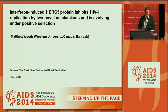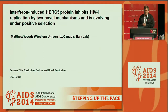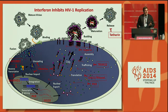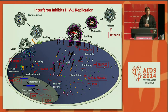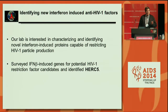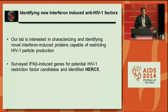HERC5 restricts two stages of the HIV type 1 life cycle, and it is a protein undergoing positive selection. When your body is infected with a virus, your cells detect the presence of a virus and produce interferon, which causes up-regulation of interferon-induced proteins. Some of these have been shown to be antiviral, restricting various stages of the HIV type 1 life cycle. Our lab is interested in characterizing the anti-HIV effect of interferon and identifying novel interferon-induced proteins that restrict HIV type 1 particle production. When we surveyed interferon beta-induced genes for potential restriction factor candidates, we came across HERC5.